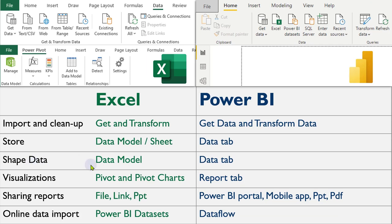In Excel you can shape data. The analytical engine in Excel is pivot tables, pivot charts, and manual calculations. In Power BI it's the Reports tab. How do you share reports in Excel? Send files and links by putting it on OneDrive, Teams, SharePoint, or copy-paste into PowerPoint. In Power BI you can save as a PBIX file, put on OneDrive SharePoint, publish to the Power BI portal where you can also see it on mobile app and export to PPT or PDF.